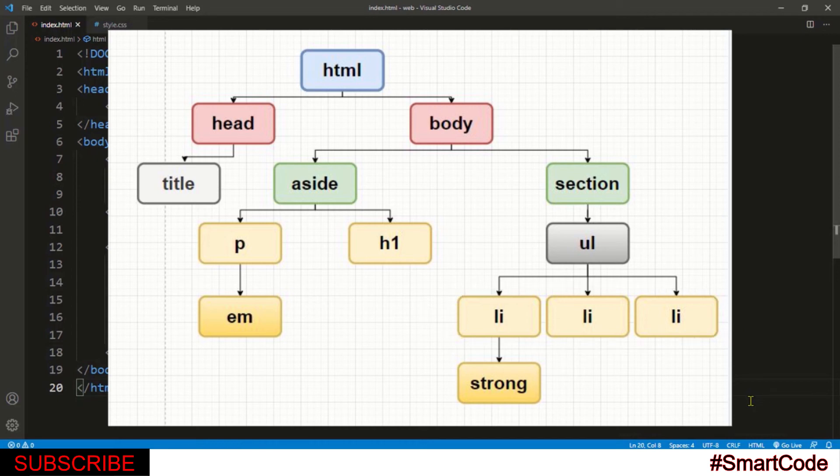So let's now pick some random tags and try to figure out the relationship between them. Let's say what is the relationship between the body tag and this li and the answer is the body is an ancestor while the li is a descendant.